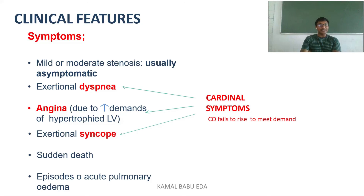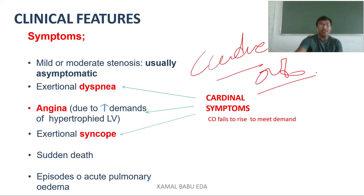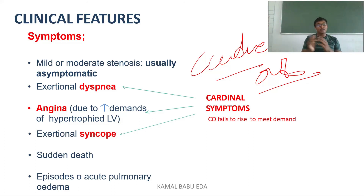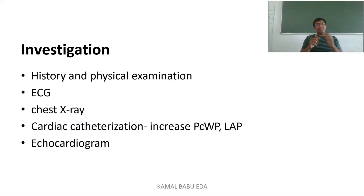There are three cardinal symptoms. In mild and moderate stenosis, there are usually no symptoms. In severe stenosis, when cardiac output does not meet demand, cardinal symptoms appear: exertional dyspnea, angina due to vigorous beating of the already hypertrophied left ventricle, and exertional syncope. Sudden death and episodes of acute pulmonary edema are also key features of severe aortic stenosis.